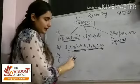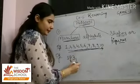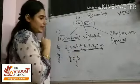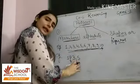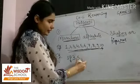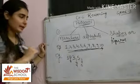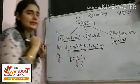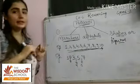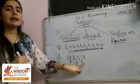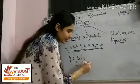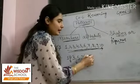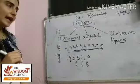Aur yahan par hum two ke baad jo aata hai directly three likhenge. So three ke baad mein aata hai four, toh four ko bachon hum skip kar denge aur hum yahan likhenge five. Next — five ke baad kya aata hai? Six. Toh six ko humne yahan skip kar diya. Six ke baad kya aata hai bachon? Seven — toh yahan hum likhenge seven. Now 7 ke baad mein kya aata hai? 8 — so here we will skip 8, aur 8 ke baad kya aayega — 9 — toh humne yahan par 9 likh diya.